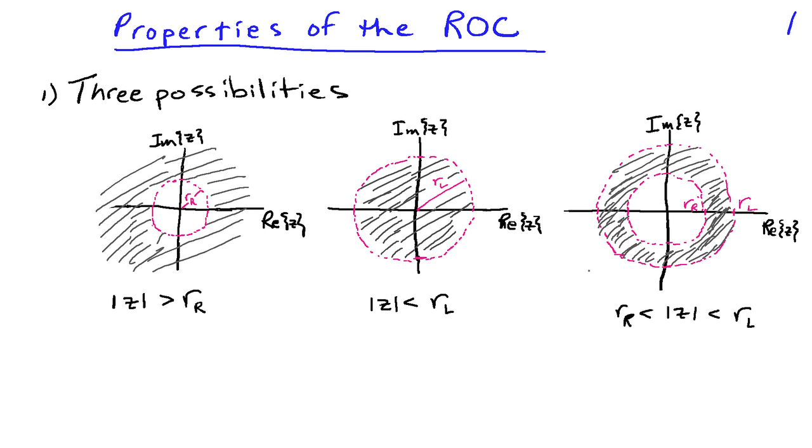We've seen that there's three possibilities for the region of convergence. It can lie exterior to a circle of radius r_r. It can lie interior to a circle, and we had the interior of a circle when we were looking at the non-causal or anti-causal exponential sequence. And it can lie in a ring. Those are the three possibilities that we can have for the region of convergence.